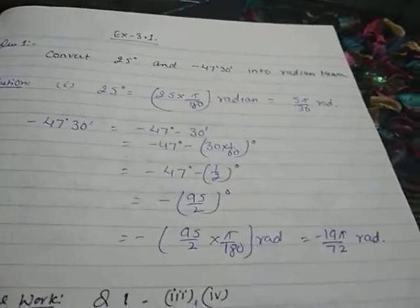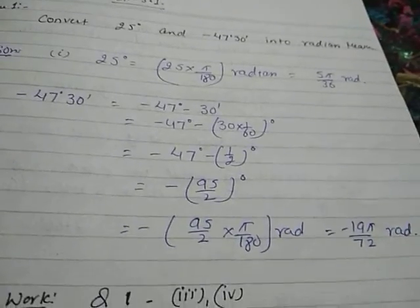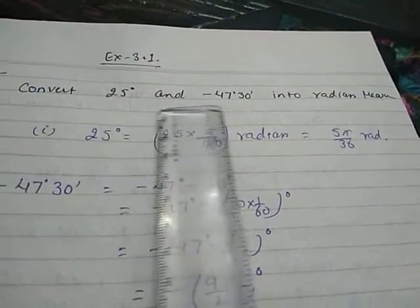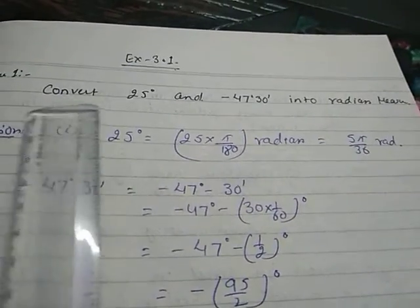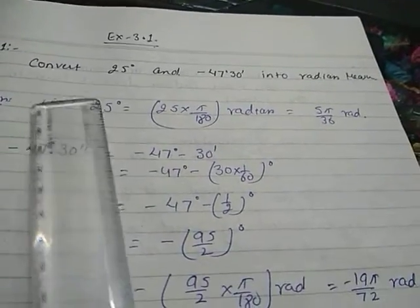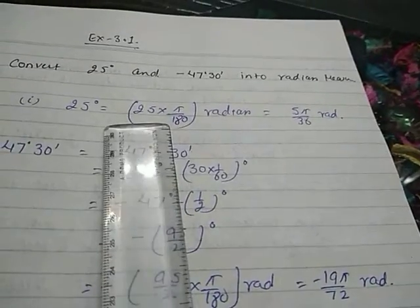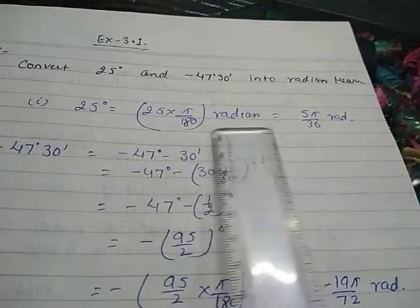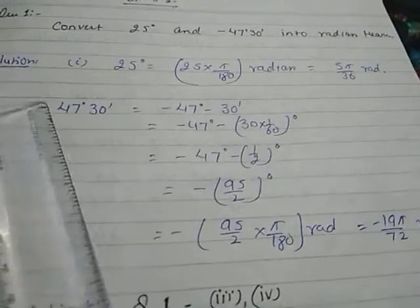In Exercise 3.1, I am going to explain two questions on conversion — radian to degree and degree to radian. Question 1 is: convert 25° and −47°30′ into radian measure. Since 1° = π/180 radians, 25° = 25 × π/180 = 5π/36 radians.